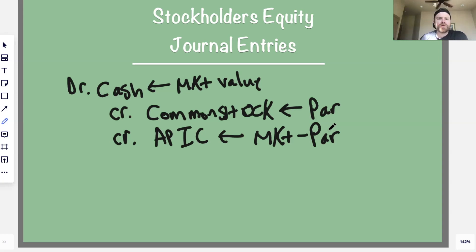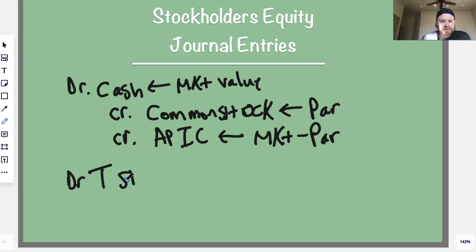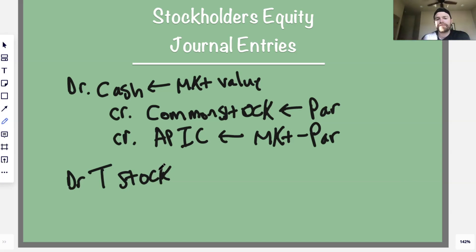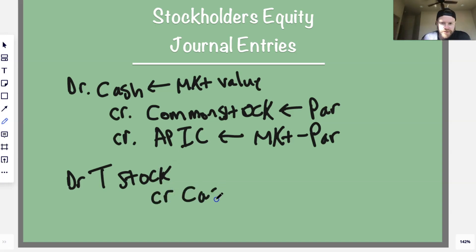With treasury stock — we won't go too deep into this — if you buy back your stock, you debit treasury stock because it offsets and reduces equity. Equity is a credit, so we debit treasury stock to reduce it, and you credit cash since that's what you bought it with.